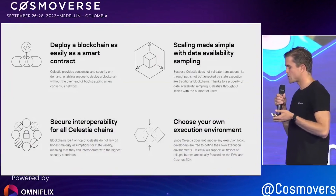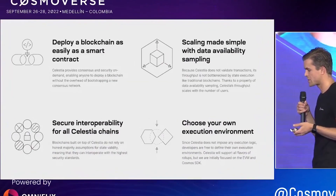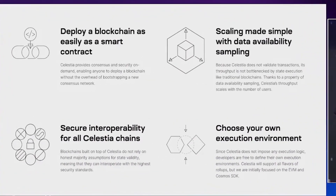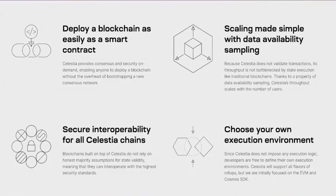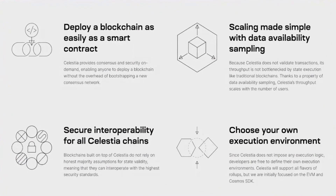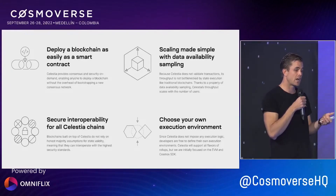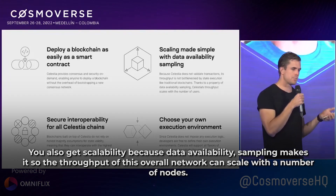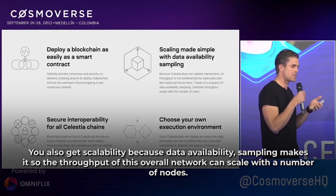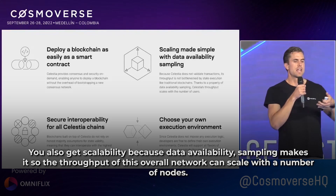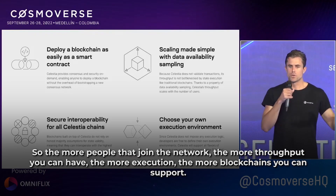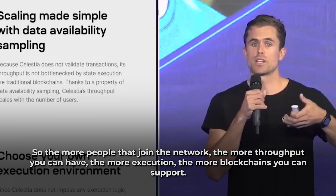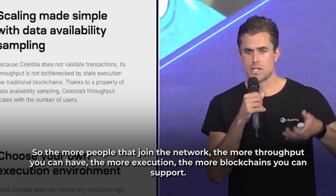In summary, a modular blockchain architecture makes it as easy to deploy a blockchain as it is to deploy a smart contract, because you no longer have to bootstrap that whole consensus network, which is high overhead. You also get scalability because data availability sampling makes it so the throughput of the overall network can scale with the number of nodes — the more people that join, the more throughput you can have, the more execution and blockchains you can support.